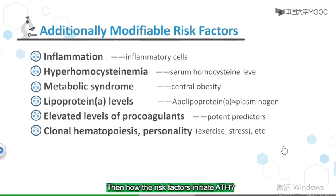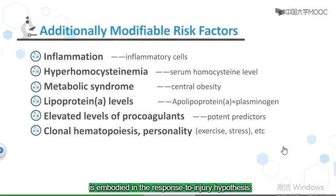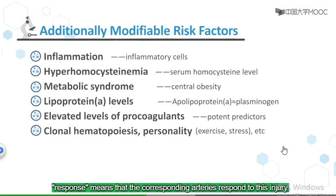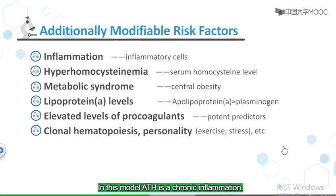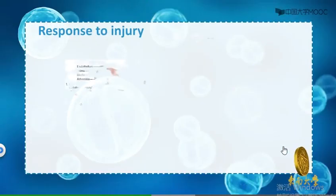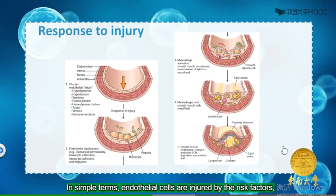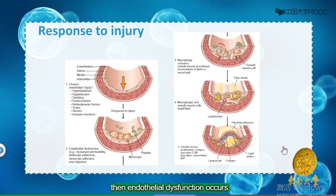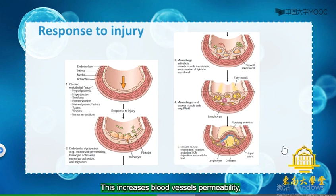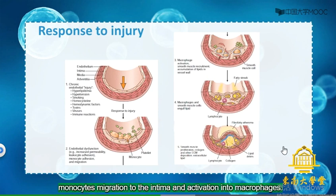How do the risk factors initiate ATH? The currently accepted view of pathogenesis is embodied in the response-to-injury hypothesis. Injury to endothelial cells and the cellular damage response means that the corresponding arteries respond to this injury. In this model, ATH is a chronic inflammation. In simple terms, endothelial cells are injured by risk factors, endothelial dysfunction occurs, which increases blood vessel permeability, leukocyte and platelet adhesion, and monocytes migrate to the intima and are activated into macrophages.